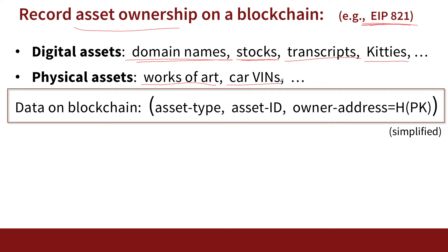Instead of storing everything at a DMV — who knows, maybe the DMV loses some information, or maybe they inappropriately transferred one car from one owner to another — all that can be stored on the blockchain. Anyone can verify who owns which car, and it's easy to prove car ownership as well.